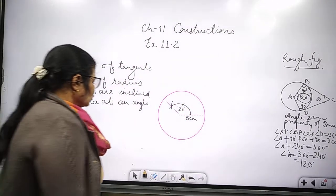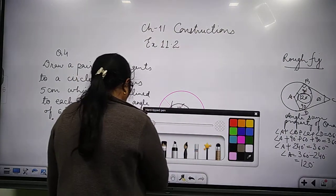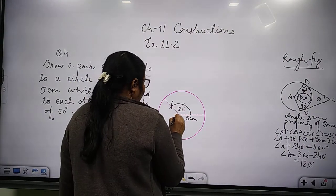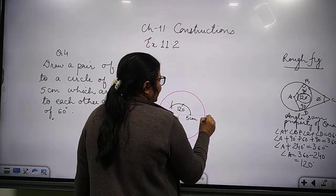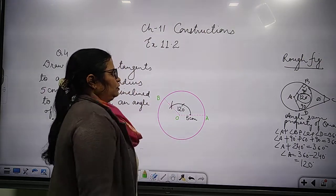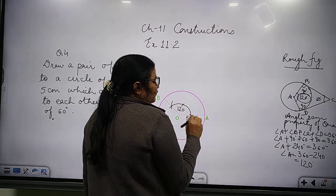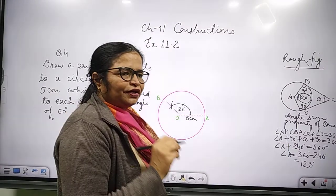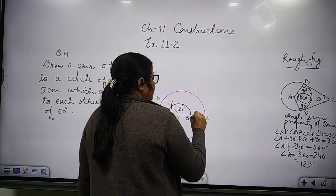Now students, what will we be doing next? We will draw here. Let's have this point as O, this point as A, and this point as P. Now at point A, we will draw an angle of 90 degrees to have the tangent.